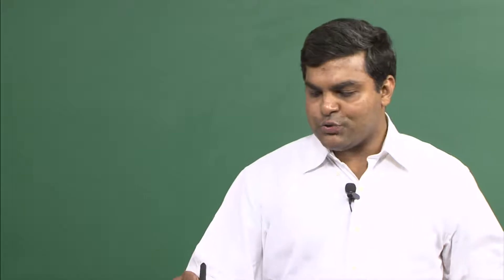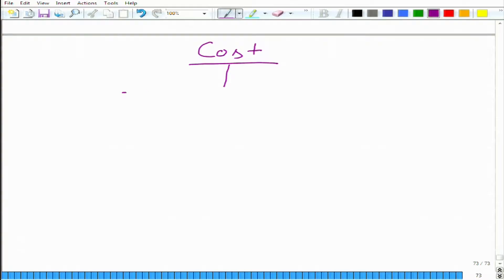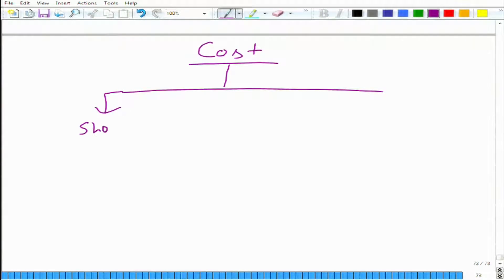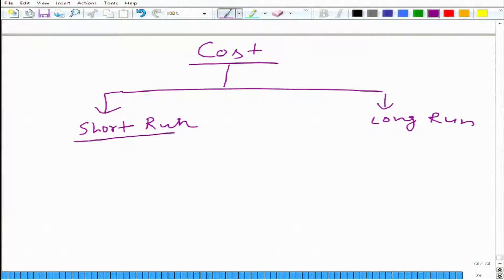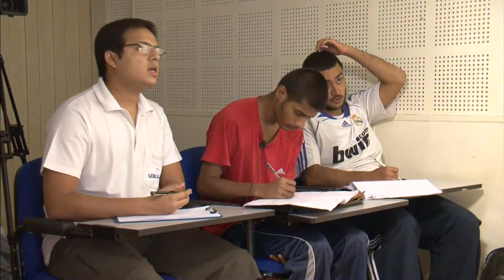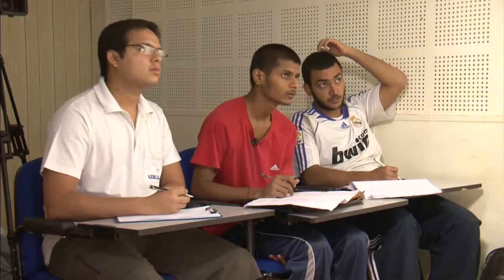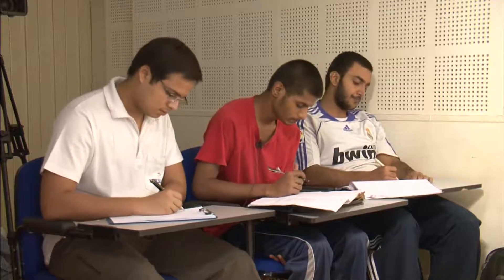Cost, of course, we can talk about cost in two different settings. We have already learned about short run and long run. What do we mean by short run? At least one input cannot be varied, cannot be changed. And what do we mean by long run? All the inputs can be varied.